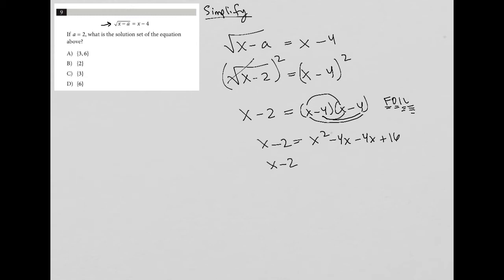And I still have my x minus 2 over here. So x minus 2 is equal to, let's combine like terms on the right-hand side, x squared. Negative 4x minus 4x is negative 8x plus 16.